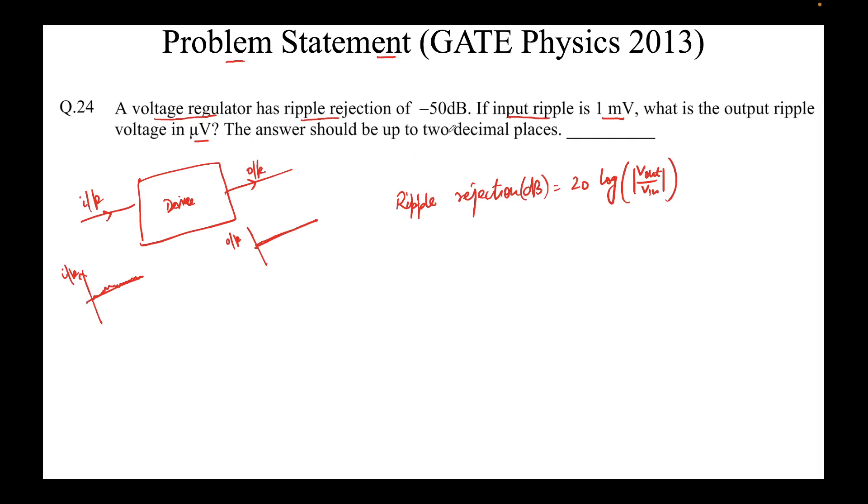Now, we will just put in the values that we have here. So, ripple rejection is given as minus 50 dB is equal to 20 log. We need to find out v_out. So, we will write v_out over v_in is given as 1 millivolt.